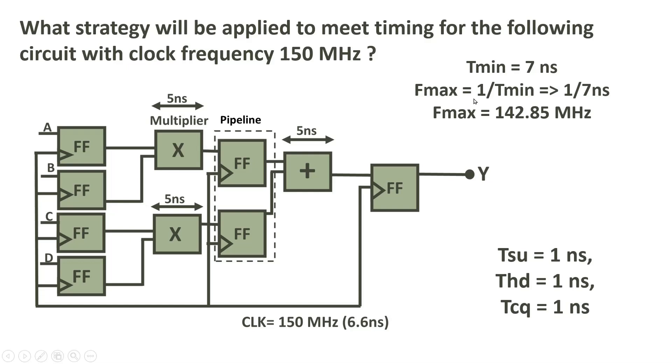So any path can be considered as critical path. Each path has 7 nanosecond of tminimum. So f maximum is equal to 1 by tminimum, 1 by 7 nanosecond. F max, if you calculate it, will become 140.85 megahertz. So this is good.